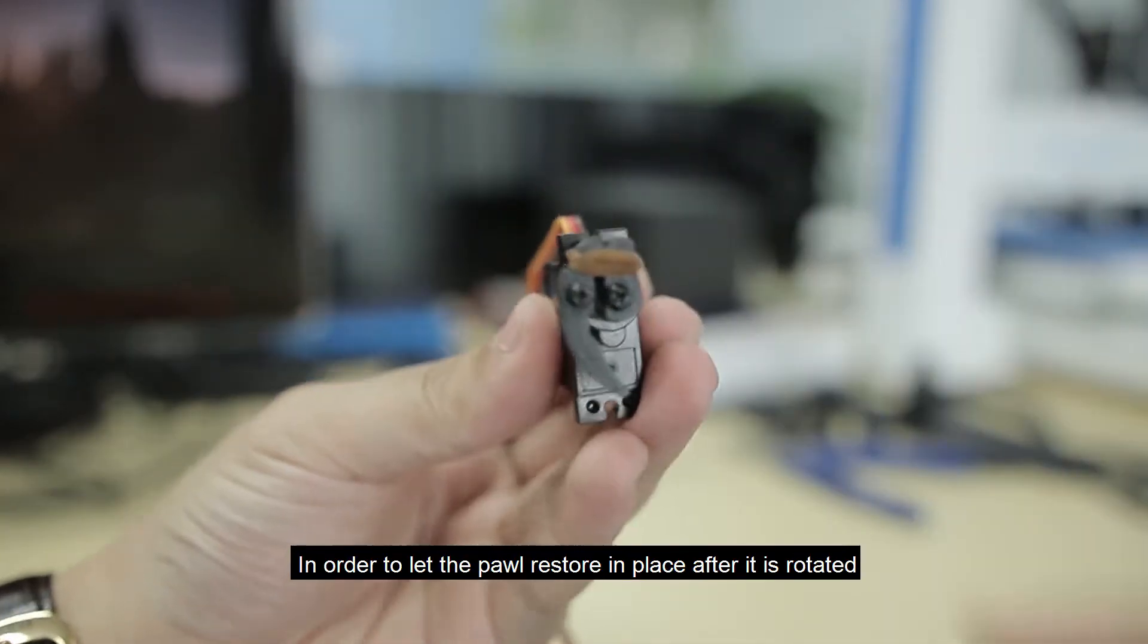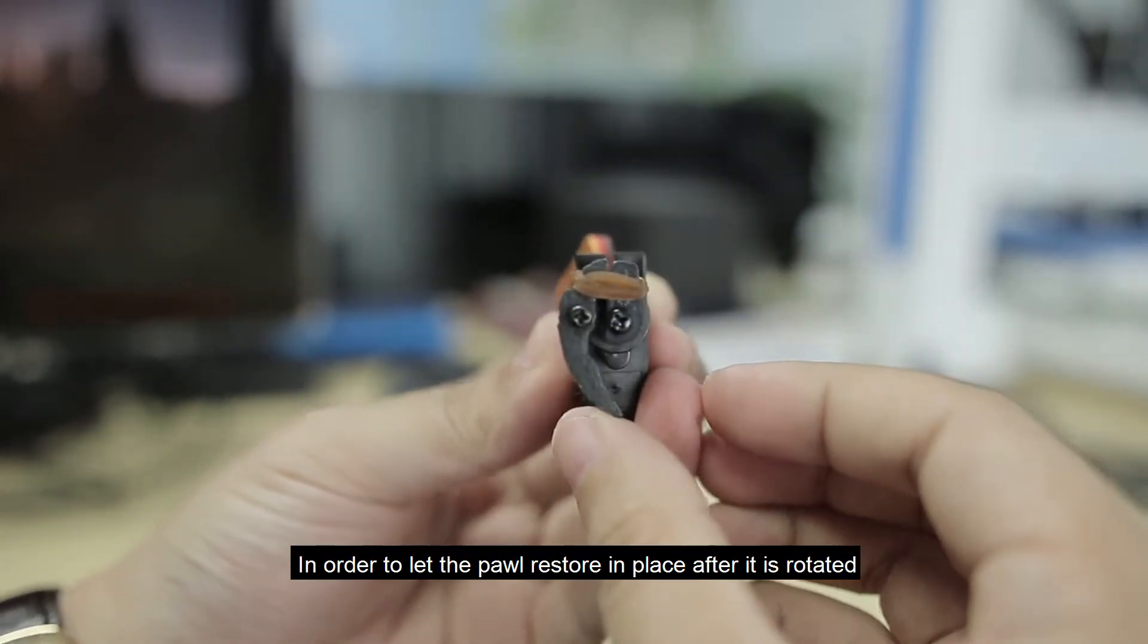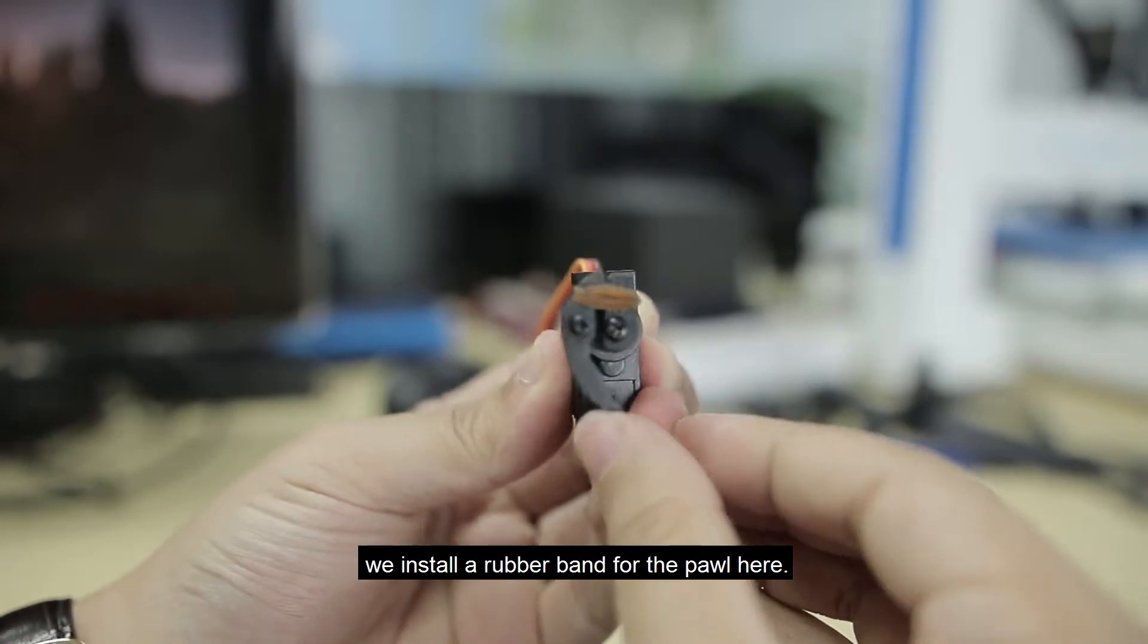In order to let the pawl restore in place after it is rotated, we install a rubber band for the pawl here.